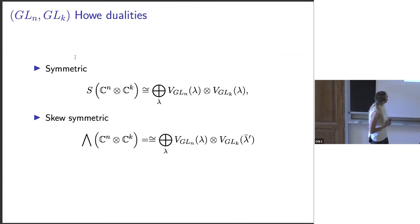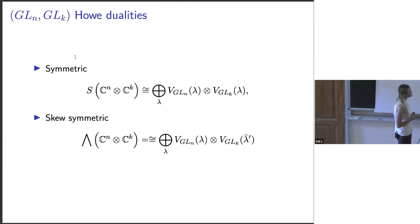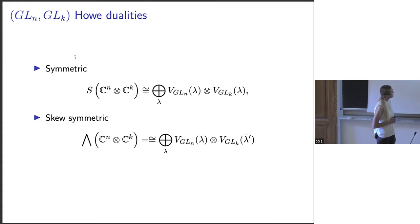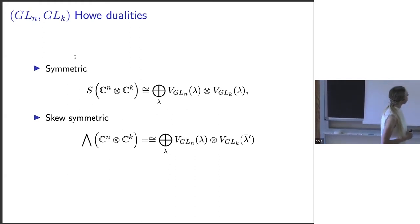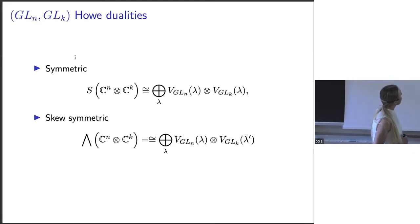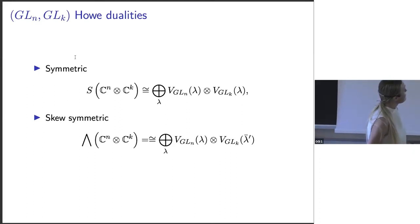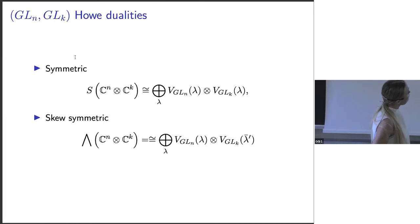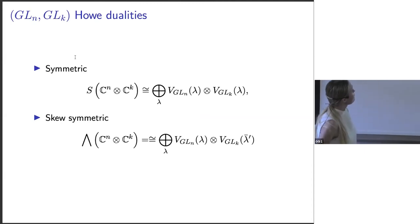First, I would like to say what Howe duality is. We are considering dual pairs of Lie groups; I will show just the GL_n × GL_k case, but later we will proceed to other dual pairs. If we consider the symmetric algebra of C^n ⊗ C^k, where C^n and C^k are the standard representations, the symmetric Howe duality says that this module decomposes multiplicity-free.